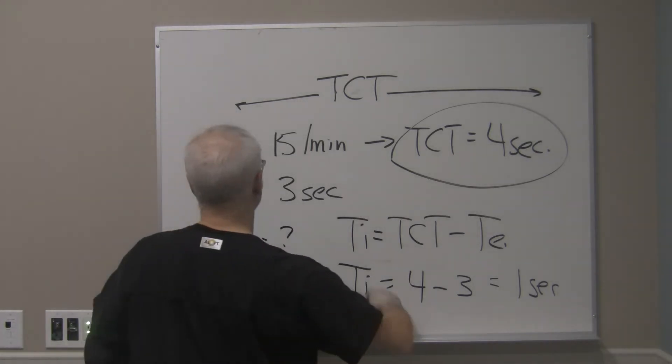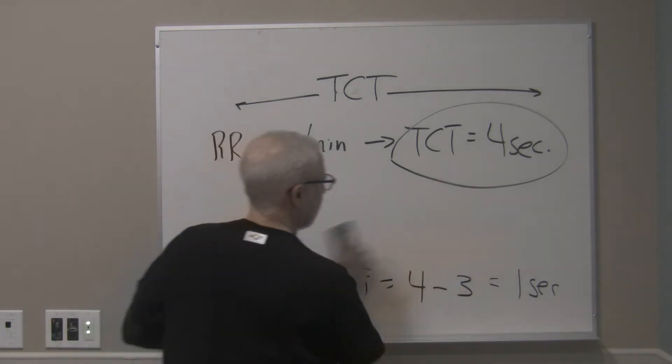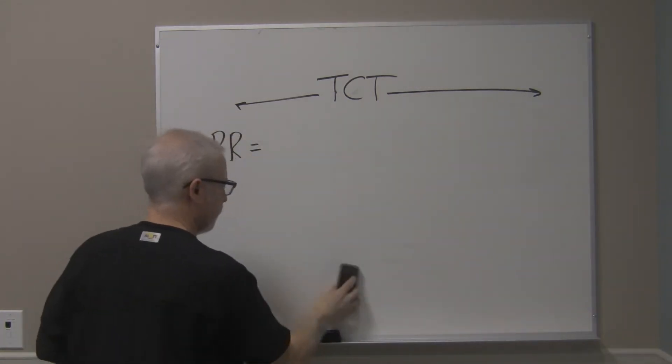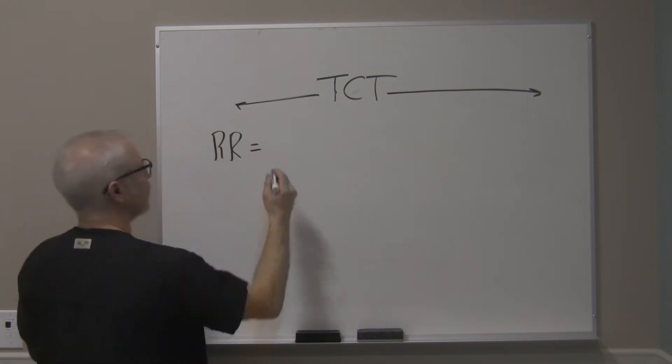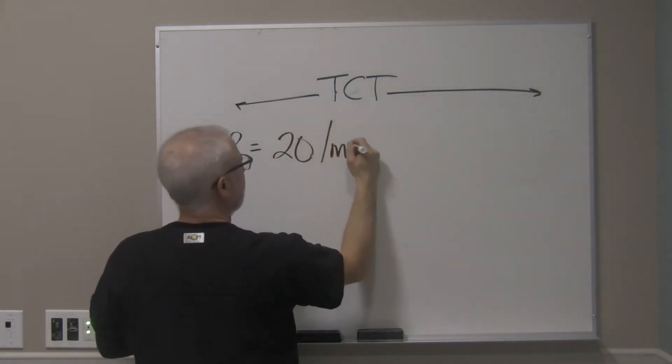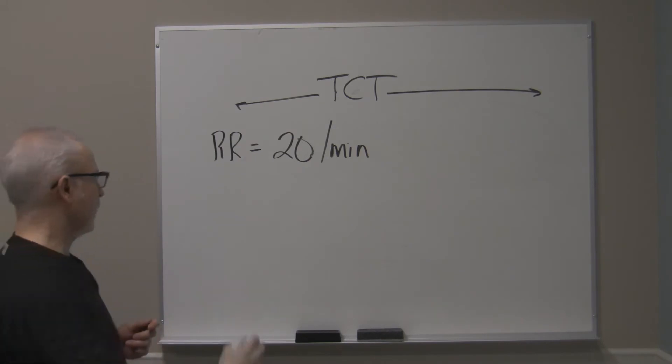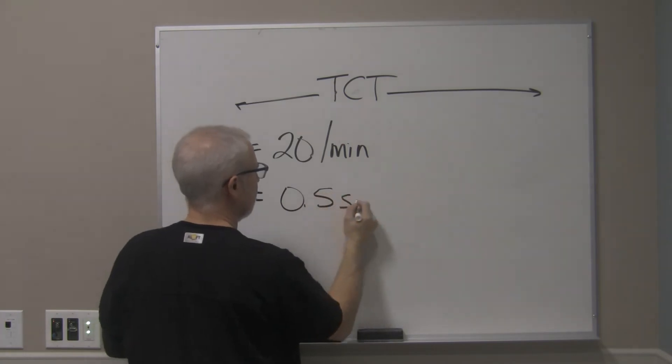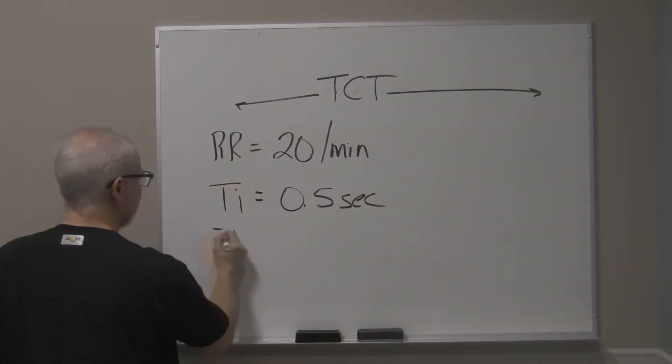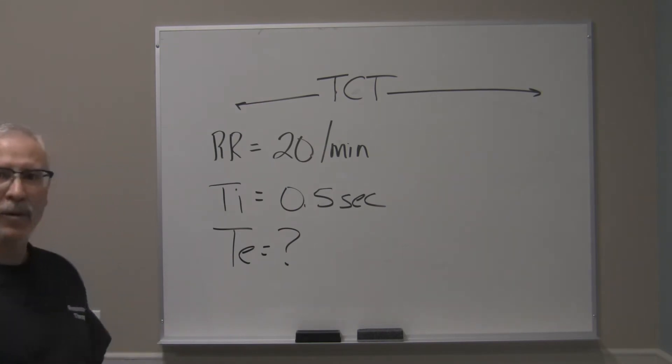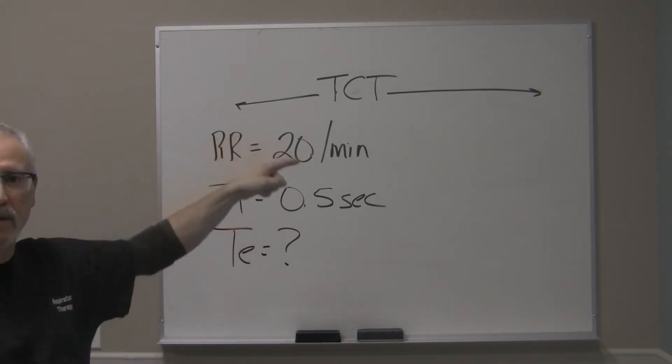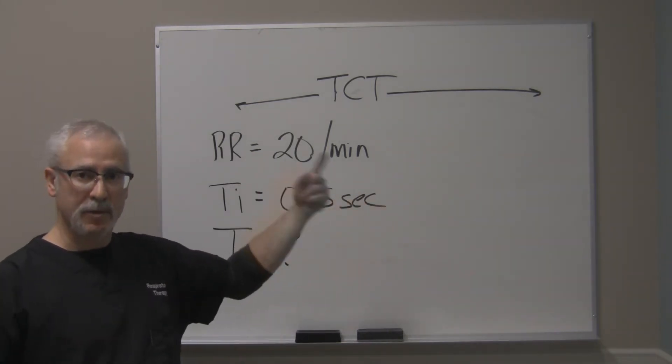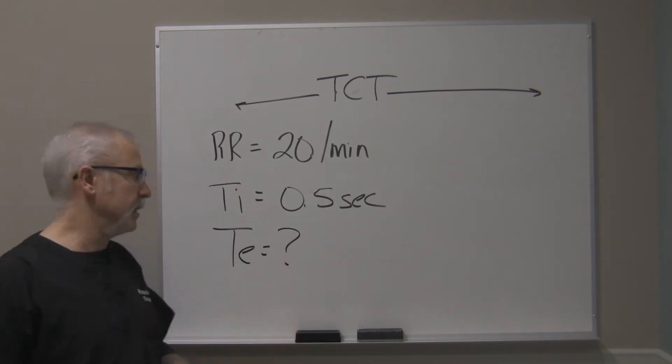All right, so let's do another one. Let's say, for example, the patient's respiratory rate was equal to 20 per minute. And you happen to have a TI equal to 0.5 seconds. You need to calculate out the patient's TE. So how would you do that? Well, again, if you've got the respiratory rate, you can get the total cycle time of the patient. And if you have the I time, you can then use the I time, subtract that from the total cycle time, and you get your TE value.